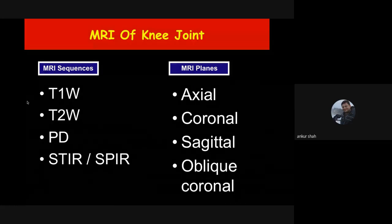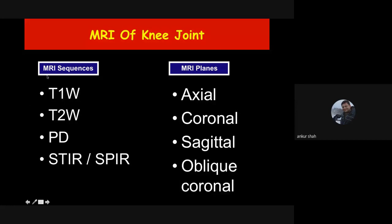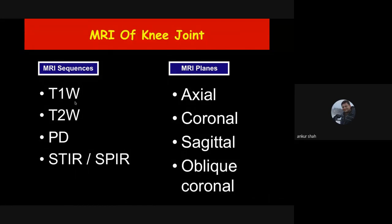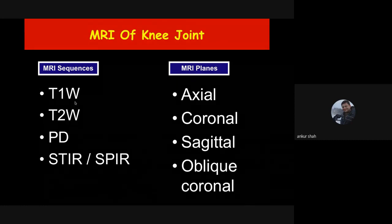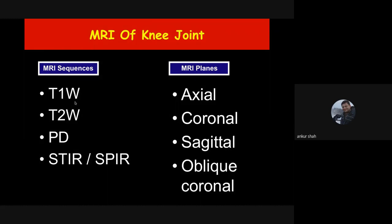For T1 weighted images, short TE and short TR are used — TE (time to echo) is around 15–20 milliseconds and TR (time of repetition) is around 600–700 milliseconds. Think of it like pressing a buzzer: if you press it for 5 seconds every 40 seconds, the 5 seconds is the TE and the 40 seconds is the TR, though in MRI these are in milliseconds. For T2 weighted, TR is more than 2000 ms and TE is around 90–100 ms.